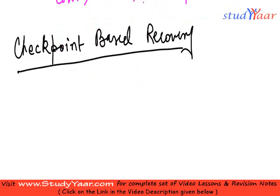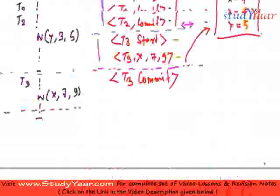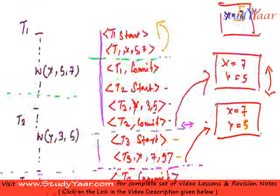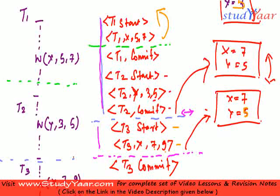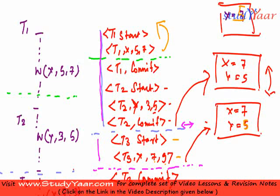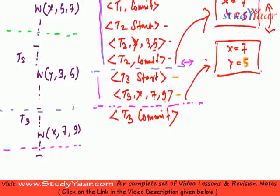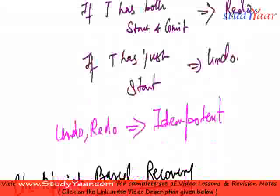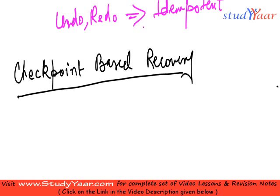We realize that in the above immediate and deferred recovery schemes, I am doing the recovery by looking at the records from the starting of the log. The reason is that I am only indicating partial commitment, so I cannot be sure whether a transaction that has partially committed has written its updates to stable storage or not. Therefore, I have to keep redoing the transaction even if it has already made its updates in the database.